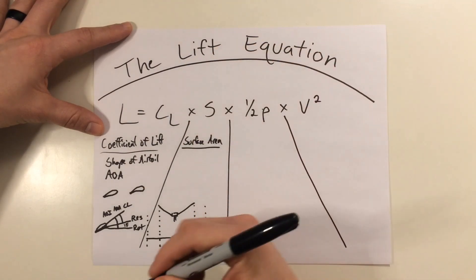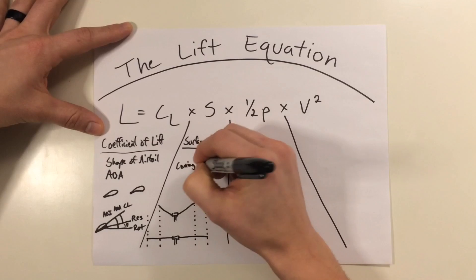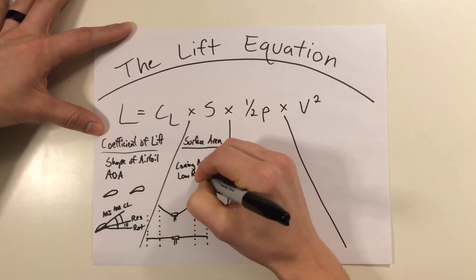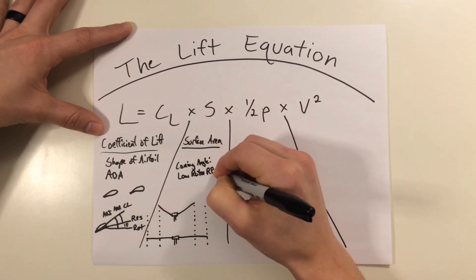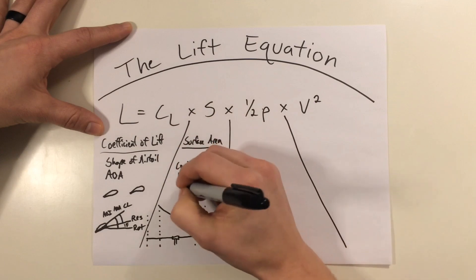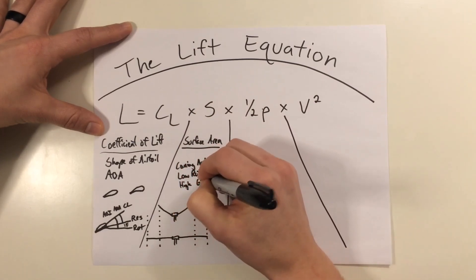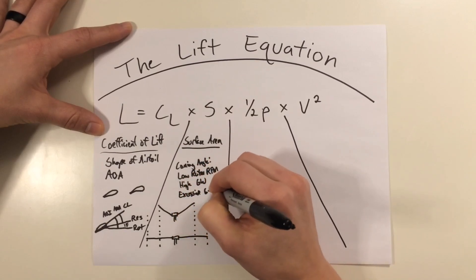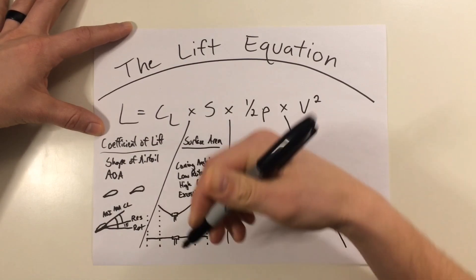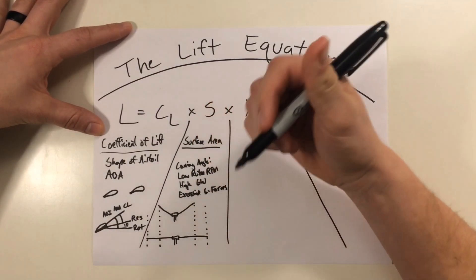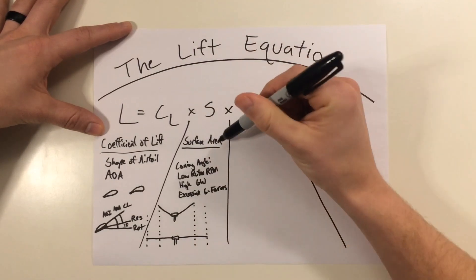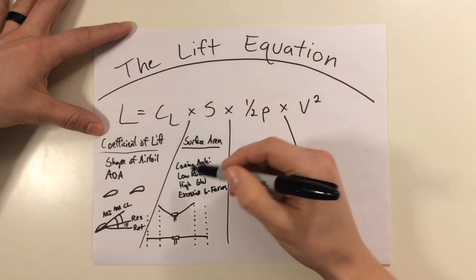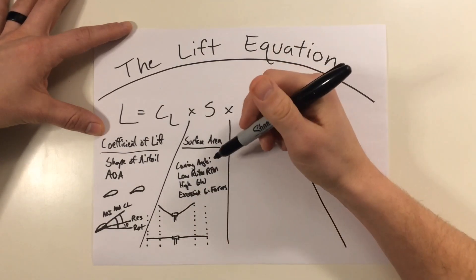Now, some factors that affect rotor coning are things like low rotor RPM. As the rotor slows down, it's not able to hold its rigidity, and it starts to cone up. Things like high gross weights, and also excessive g-forces. Now, all these factors affect the amount of rotor coning. So, although we don't directly affect surface area, we can directly affect the amount of coning angle in the blades, and thereby, have secondary effects that affect our surface area.